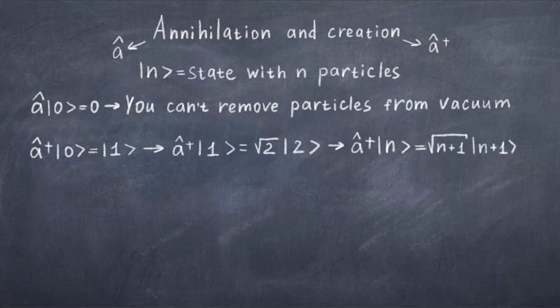Finally we can consider using the annihilation operator on our state with one particle. So if we add a hat to our 1 state, we get back our zero vacuum state. The general equation you can use to play around with this is given as a hat applied to the state n is equal to the square root of n and then the state n minus 1.